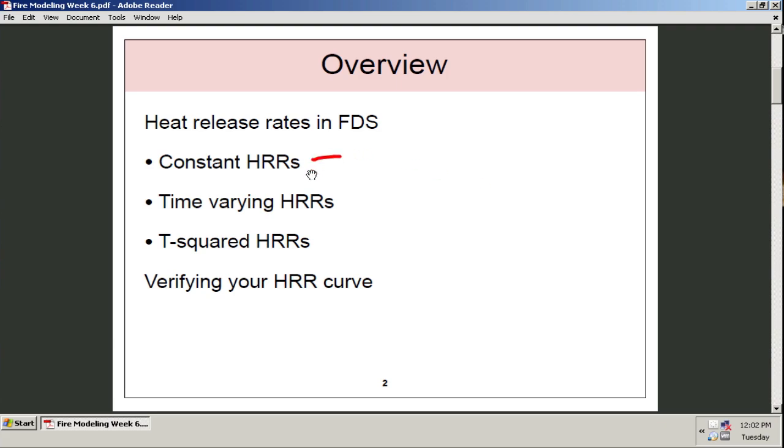First is the simple and easiest method, the constant heat release rate. We're going to look at how to do that over a varying burner area. Then we're going to look at how to input time varying heat release rates if we want to input a design fire curve. And then we can also look at how to make T-squared heat release rate curves. Finally, the last thing I want to do is how to use FDS output to verify that the heat release rate curve that you're getting is what you expected it to be.